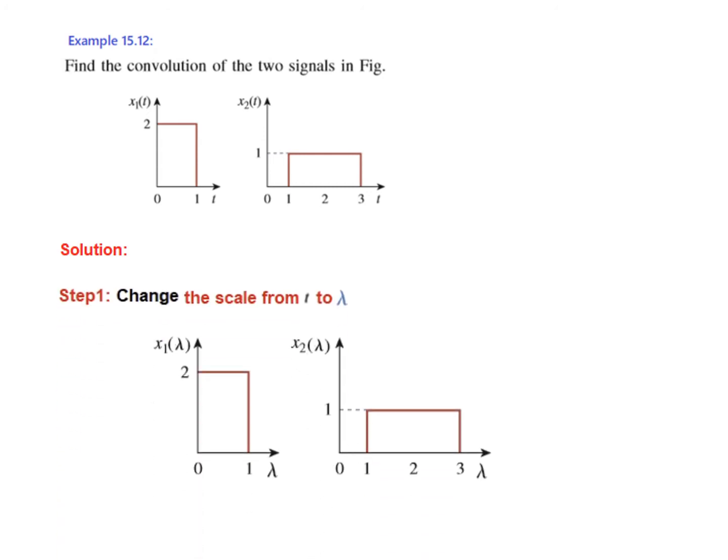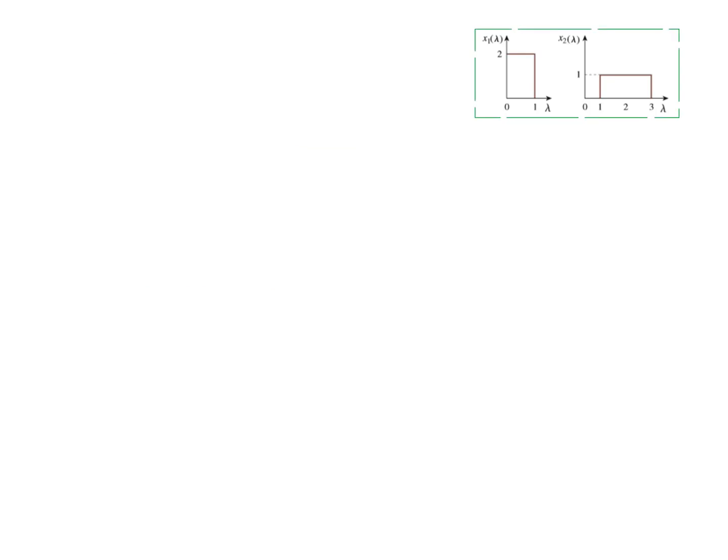So the first step we follow always in graphical analysis is to change the scale from t to lambda or t to z or any other variable. We make this change of scale because we will be using t as a variable in solving this problem. Once we have changed the variable to lambda, you can see t has been changed to lambda. So the name x1t now becomes x1 lambda and x2t becomes x2 lambda.